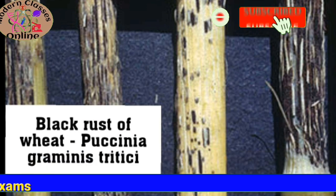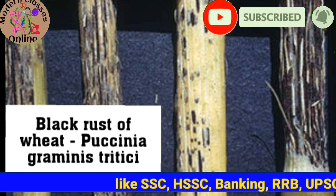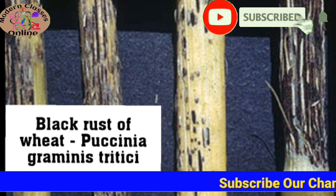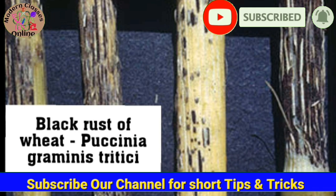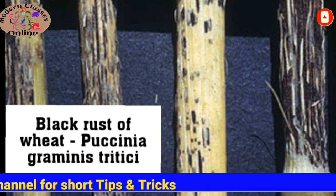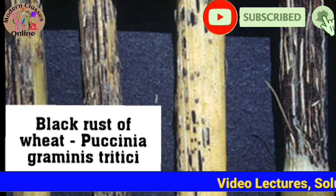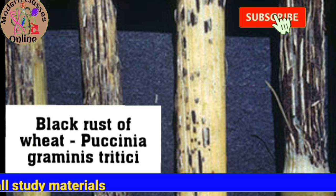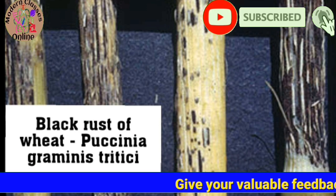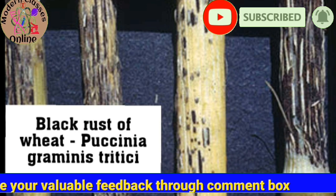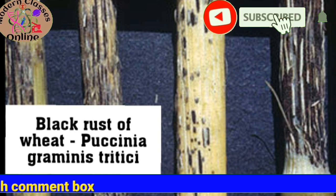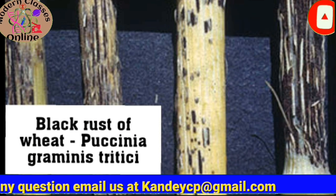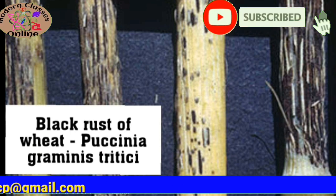Before we look at the picture, this is black rust of wheat. There are many rusts — we have black rust, brown rust. This is the black rust picture and this is the fungi used in black rust of wheat, which is the stem of wheat. You can see powder. Puccinia graminis tritici is the causative agent. Wheat belongs to the Gramineae family. The wheat's scientific name is Triticum aestivum. This is the black rust of wheat, a fungal disease.